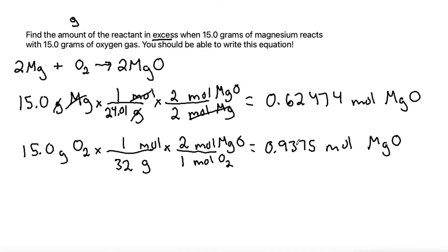So now comparing these two numbers, if all of my oxygen is consumed, I would produce 0.9375 moles of magnesium oxide. But if all of my magnesium is consumed, I would produce only 0.62474 moles of magnesium oxide.